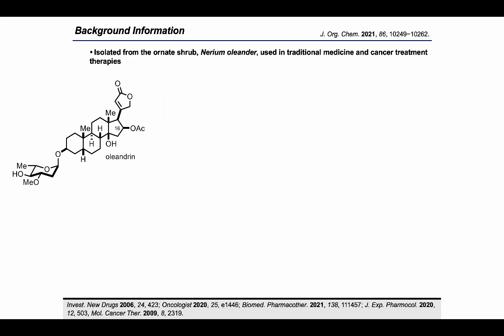Oleandrin is also used in cancer treatment therapies as both a hot and cold extract and can be extracted using supercritical CO2, which has been recently investigated in Phase 1 and Phase 2 clinical trials for patients with cancer in the United States, and demonstrated in vitro and in vivo efficacies against various viruses, including SARS-CoV-2.